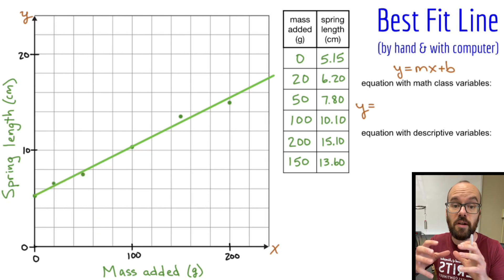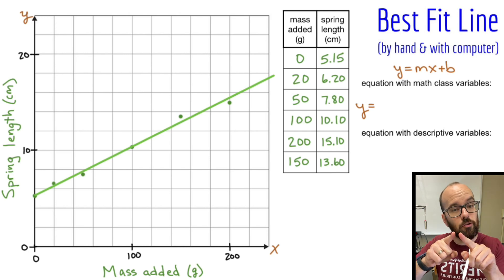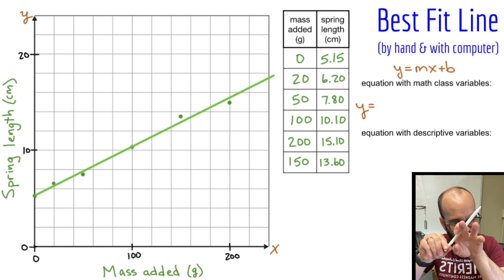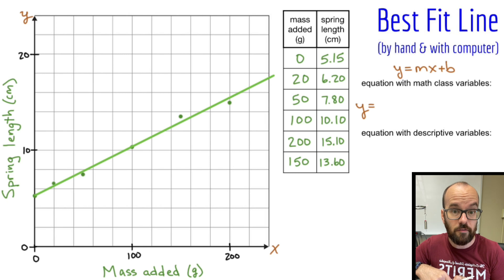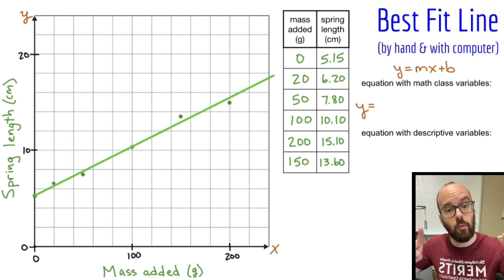You're going to read two points off of the graph, not using anything in this table right here. You're also going to pick two points that are as far away from each other as possible. If you pick two points that are really close, then if you're slightly off in reading the graph, it can have a big effect on the angle of your best fit line or the slope of your best fit line.